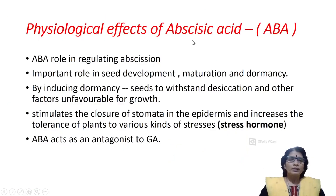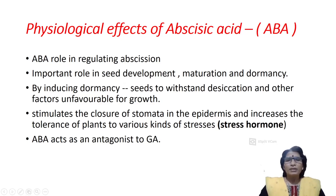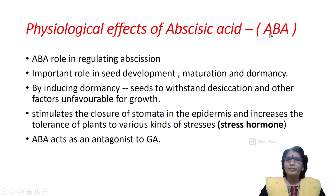Abscission is controlled by abscisic acid. Another important role of abscisic acid is seed development, seed maturation and dormancy. After completing seed development, seeds usually take some particular time for maturation. After maturation only, seeds usually germinate. But sometimes seeds undergo dormancy. Dormancy means seeds undergo a resting period without germination. Abscisic acid stimulates seed dormancy during unfavorable conditions.